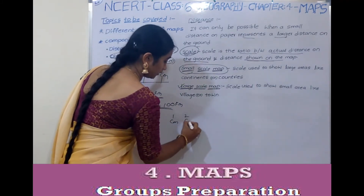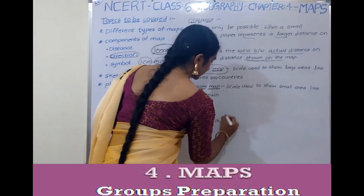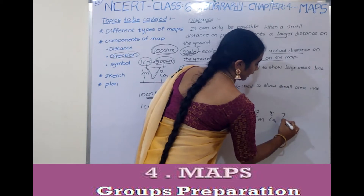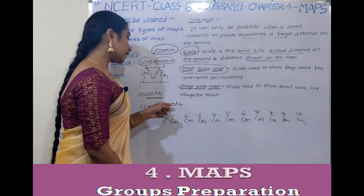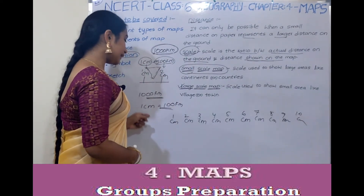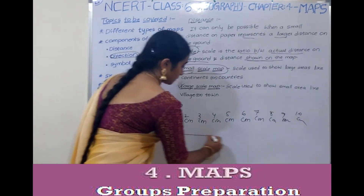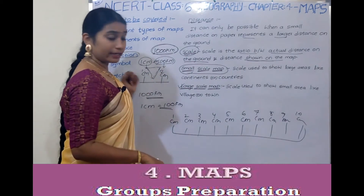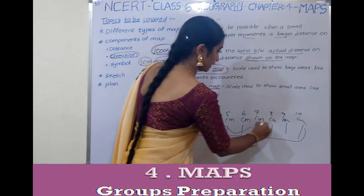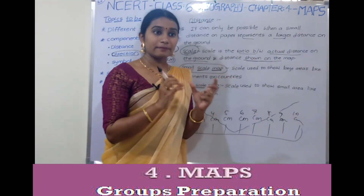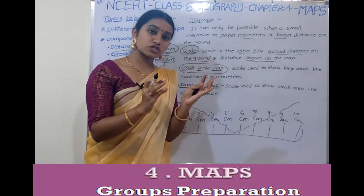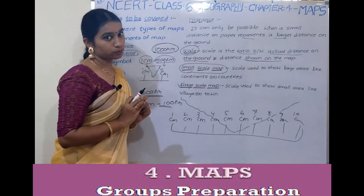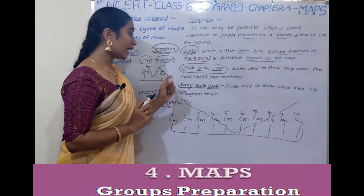On a small-scale map: 1 cm, 2 cm, 3 cm, 4 cm, 5 cm, 6 cm, 7, 8, 9, and 10 cm. Since 1 cm equals 100 km, then 1000 km equals 10 cm. This is the map.